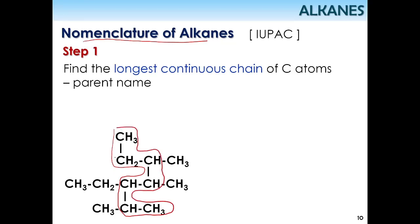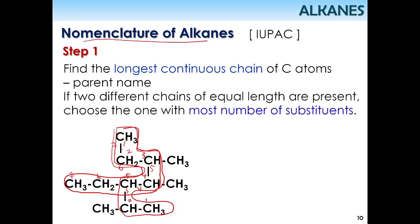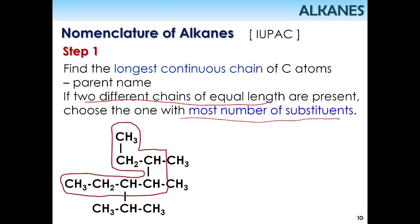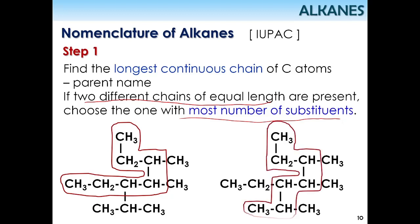How do we know this is the longest chain? Let's count the carbons: 1, 2, 3, 4, 5, 6, 7 — seven carbons. What if we calculate from the other side? Counting again: 1, 2, 3, 4, 5, 6, 7 — also seven carbons. So both paths give the same chain length. If there are two different chains of equal length, you need to choose the one with the most number of substituents.